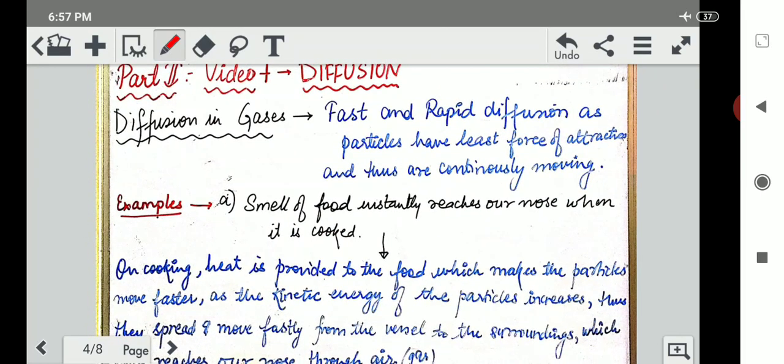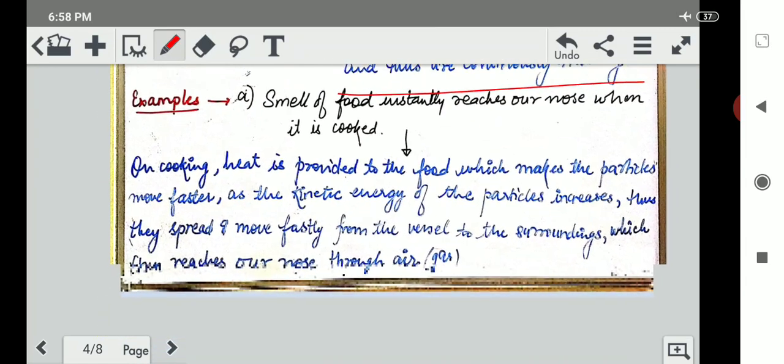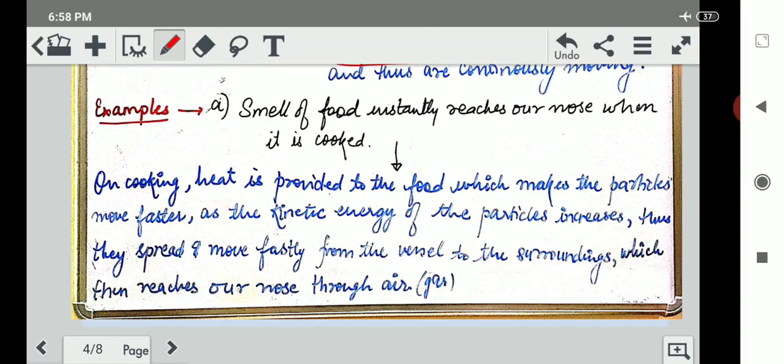As we have studied that diffusion is maximum in gases, you should also feel that if it is maximum in gases, it might be seen in our daily life also, because chemistry is all what we see happening in our daily lives. Diffusion in gases means fast and rapid diffusion as particles have least force of attraction and thus they are continuously moving. That means diffusion is very fast and rapid.